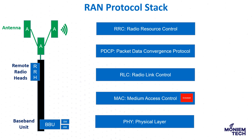The last one is RRC — Radio Resource Control — one of the most important protocols. It is called the layer three protocol and is responsible for configuring the policy-related aspects of the pipeline. RRC runs in the RAN control plane and does not process any packets on the user plane. MAC, RLC, and PDCP are layer two, while the physical layer is layer one.